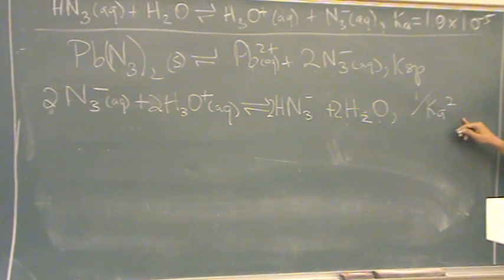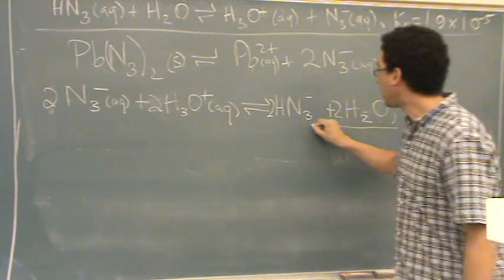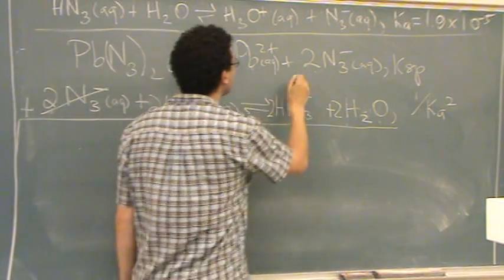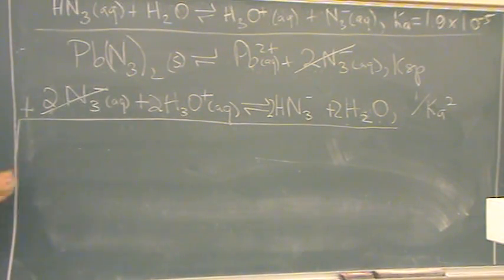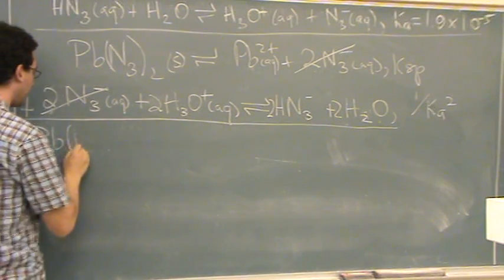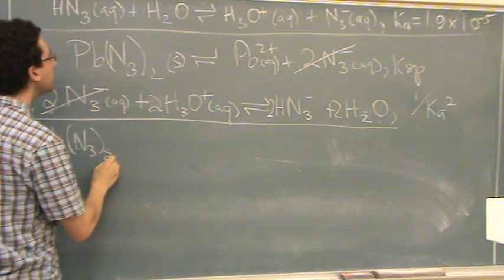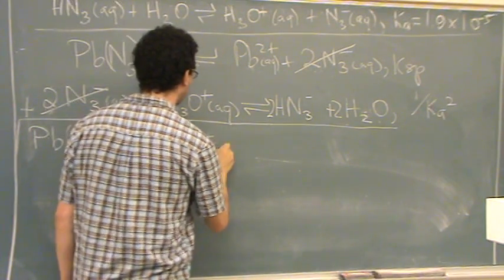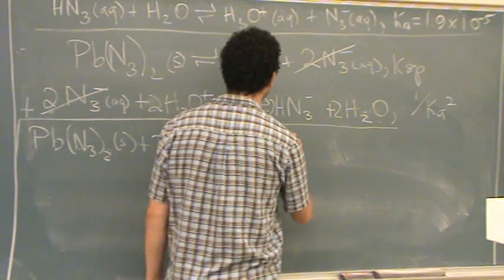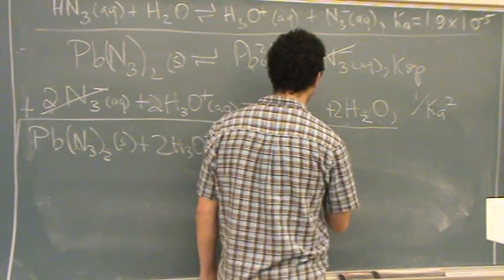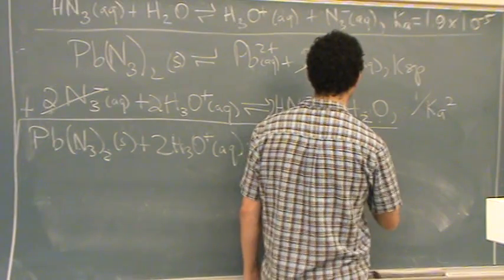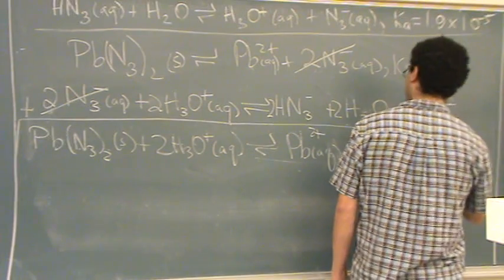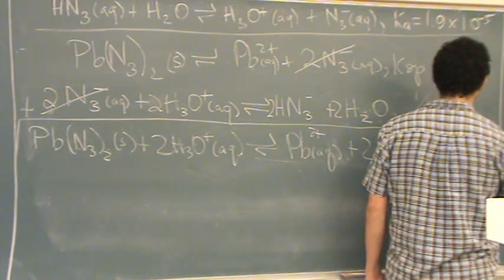So this is 1 over Ka squared. Again, the problem asked me to set up the ice table. Add this up. Notice that the 2N3 minuses will cancel out. So you got lead N3 solid plus 2 acids aqueous goes to lead aqueous 2 plus plus 2 H2O liquid.